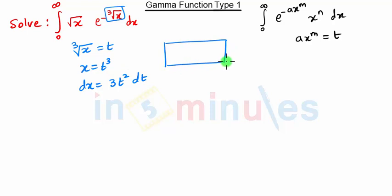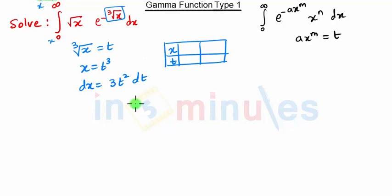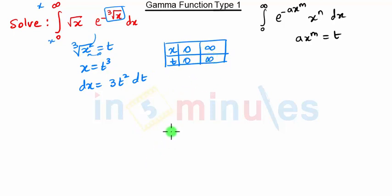So the limits will now be changed. To find the limits, always draw a table — write the initial variable (x) and the new variable (t), with the lower and upper limits. When x is 0, t is also 0. When x is infinity, t is also infinity. So our new limits are t from 0 to infinity.